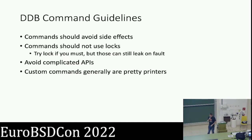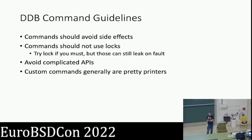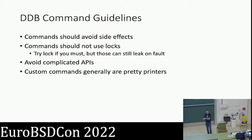The most common use case for custom commands in DDB is effectively to be pretty printers. Most are working around the fact that you can't print a struct nicely like you can in GDB when you have debug information. They're hand-built custom routines to pretty-print a structure — things like struct proc for processes, VM objects, the list of vnodes that are locked, and so on.